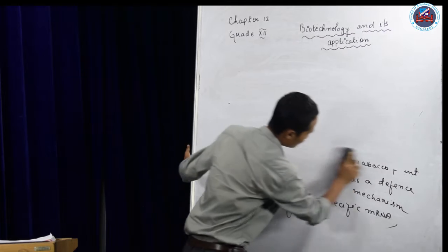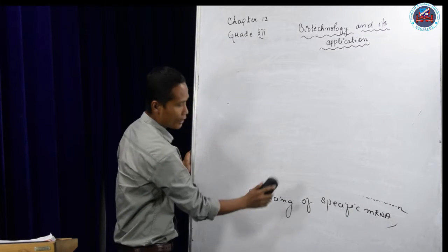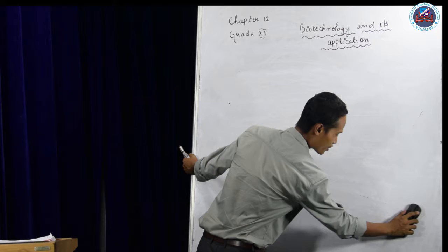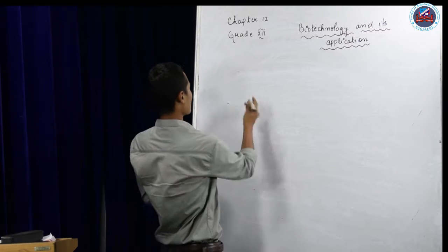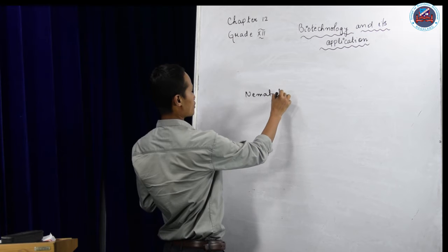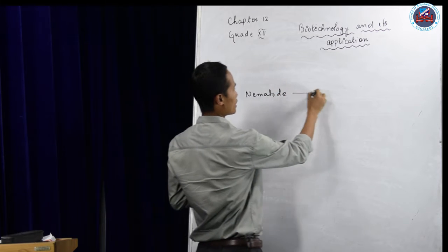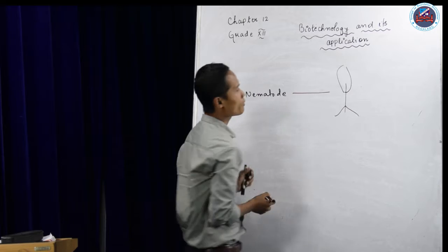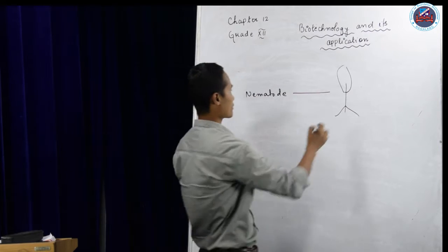In short, we can tell that RNA interference is nothing but silencing of your specific mRNA. For example, this is nematode. This is tobacco plant.